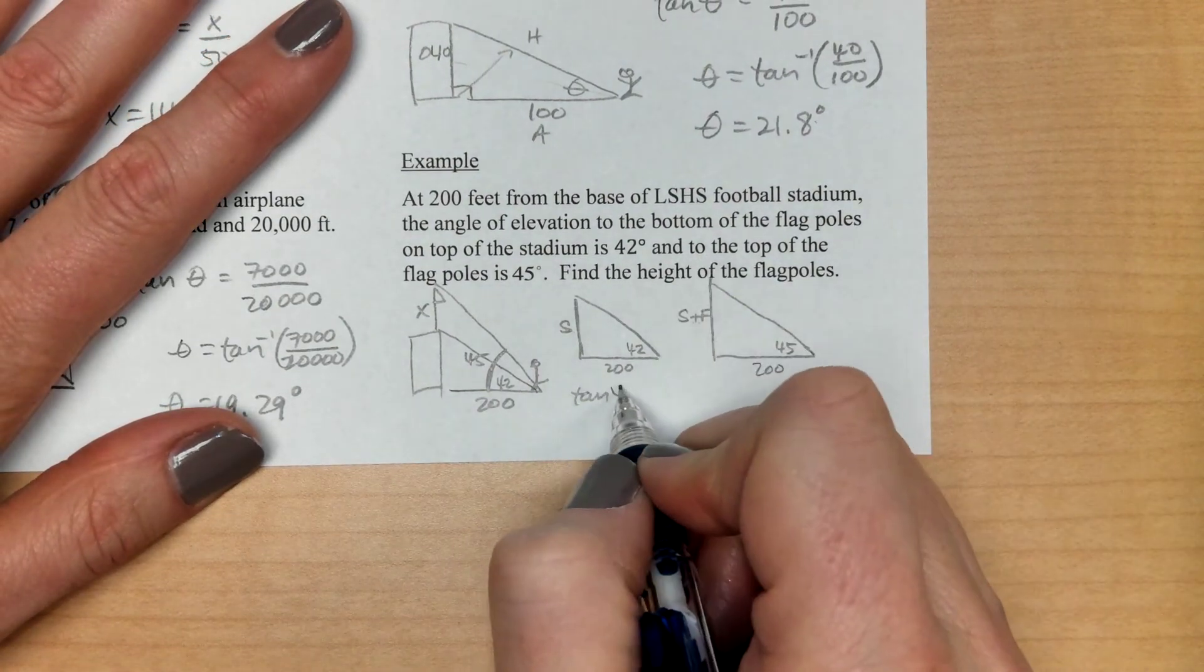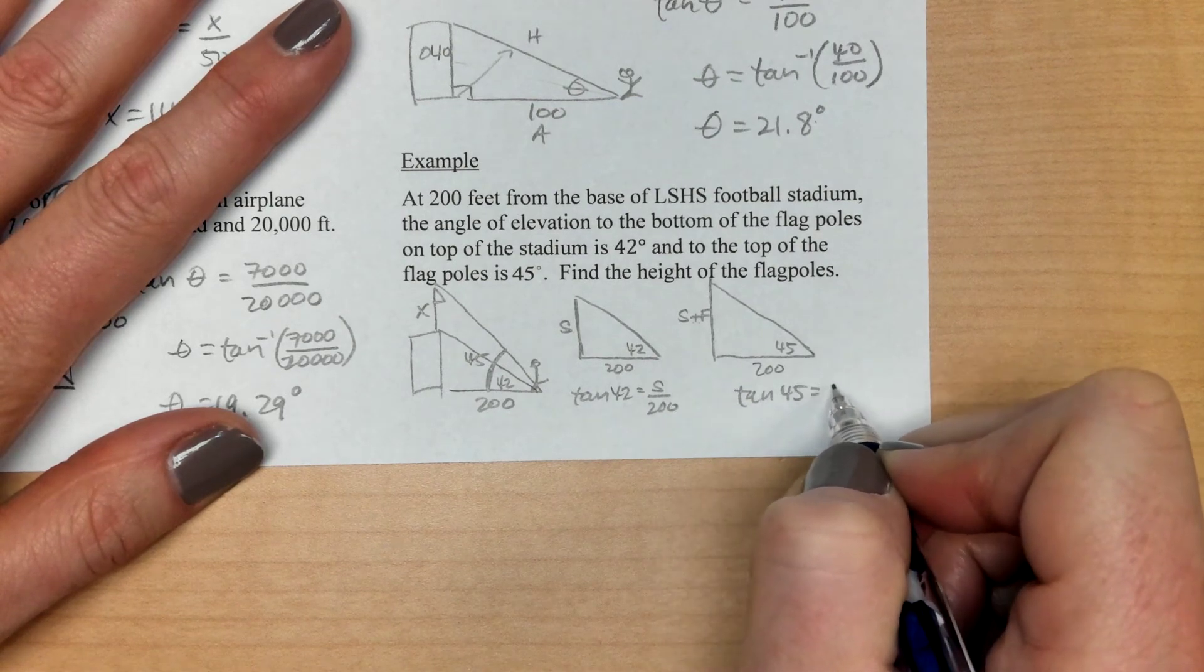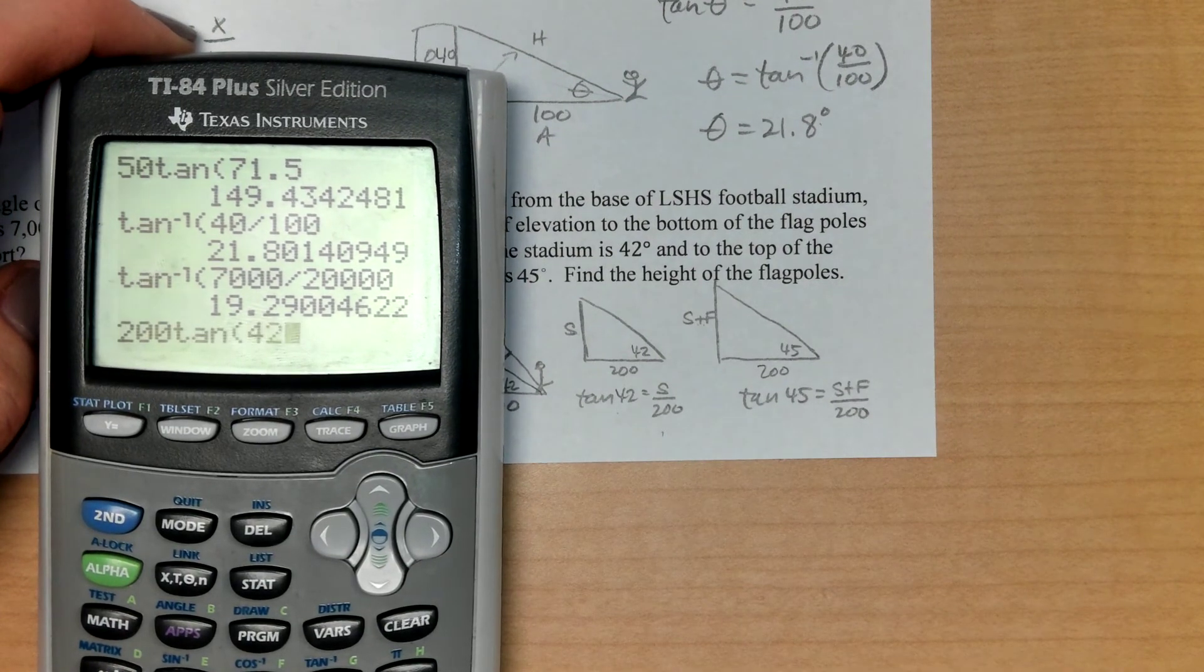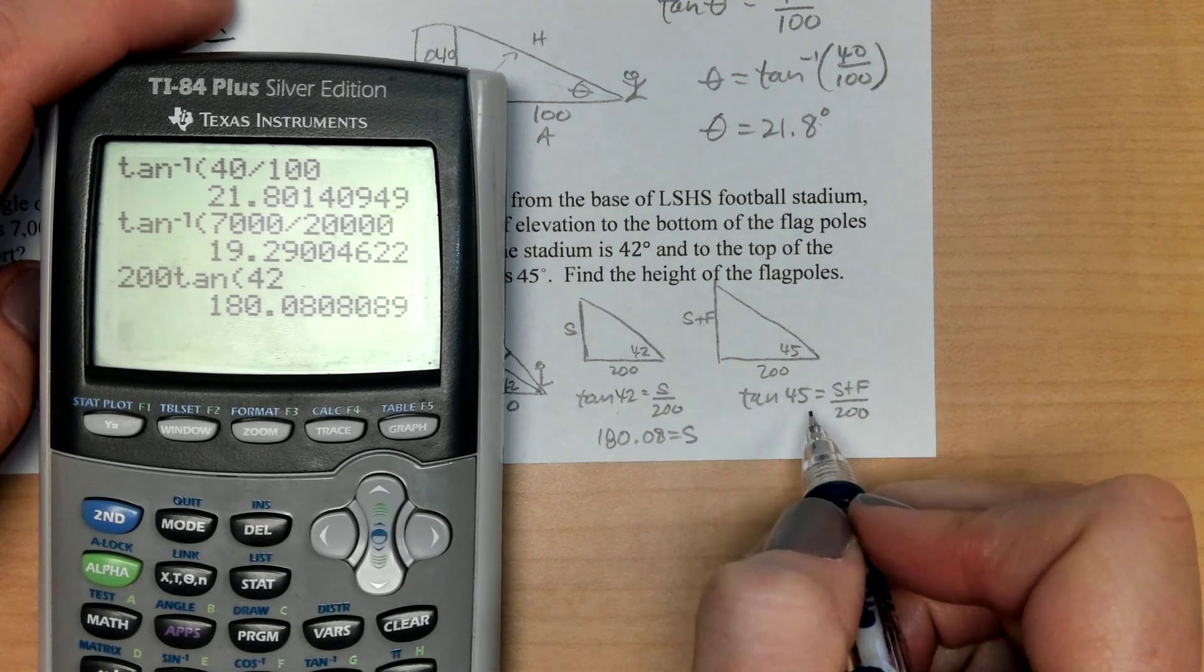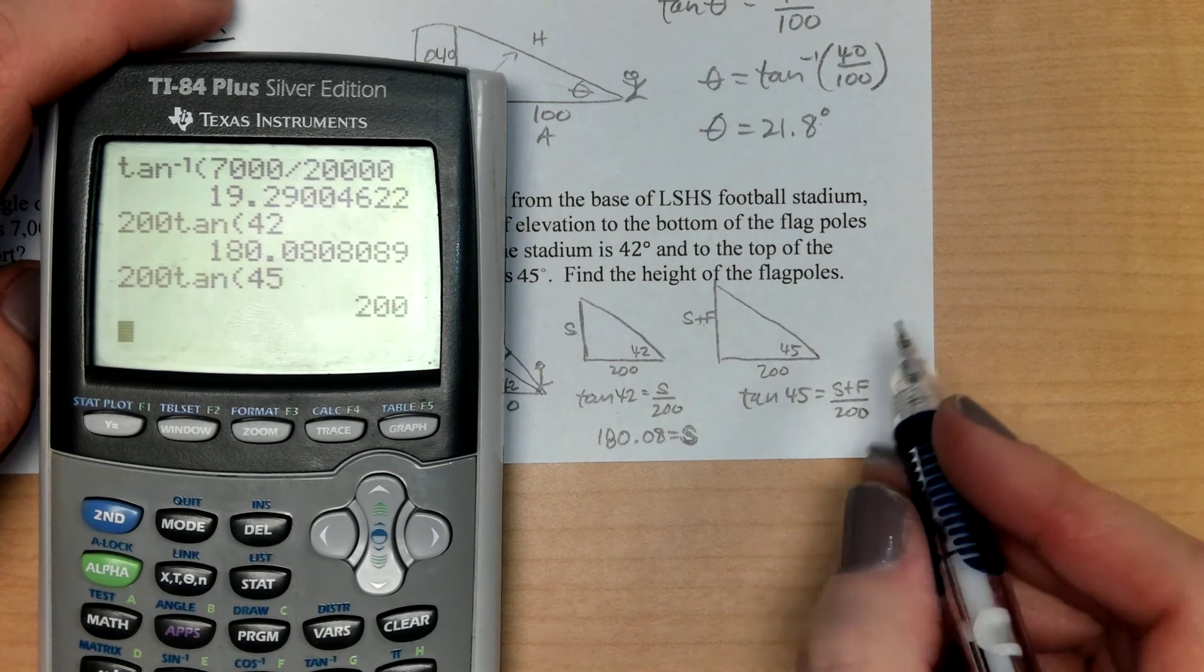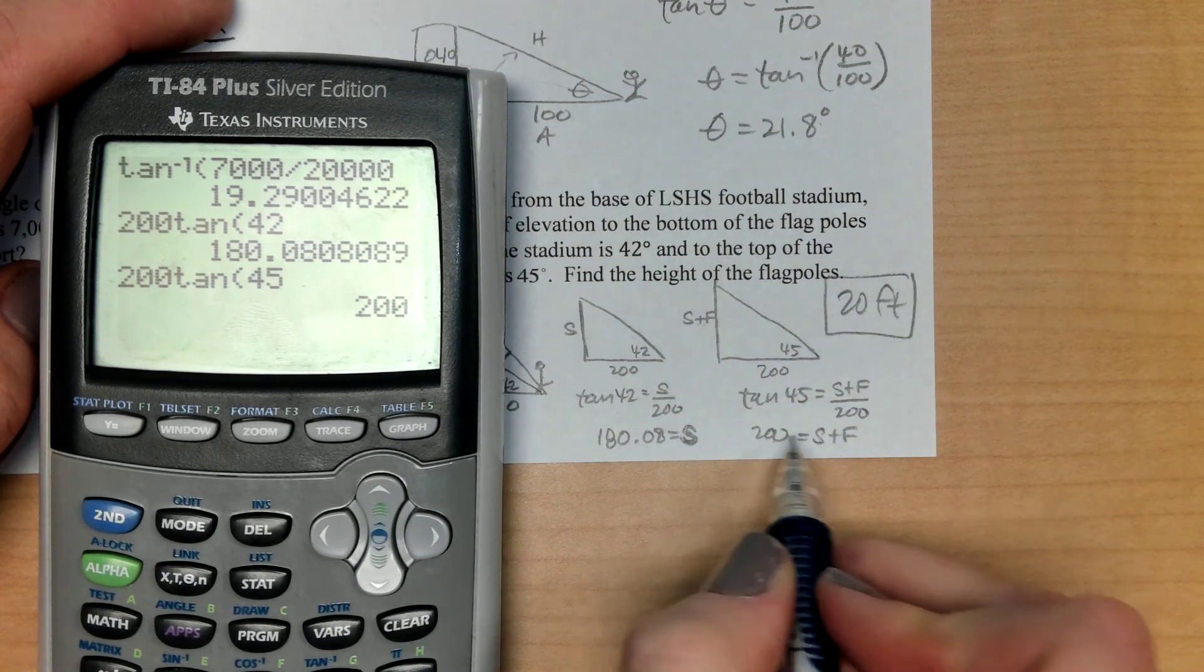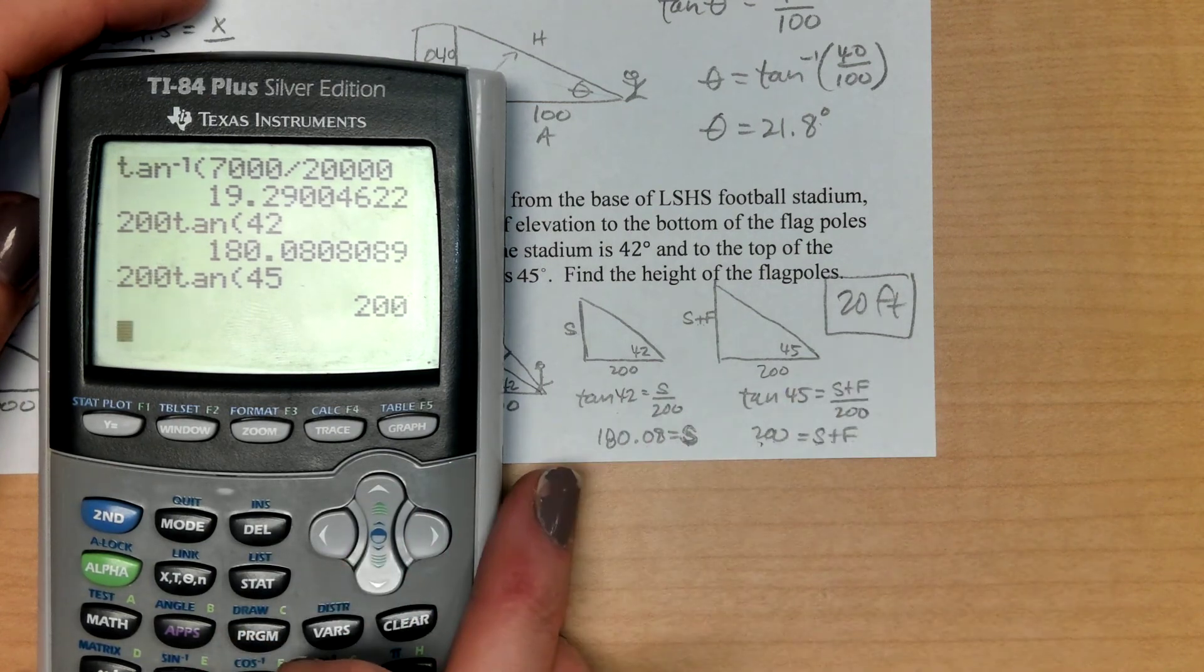Another tangent question, 42, and we've got S and 200. And this one's also a tangent. And we've got S plus F over 200. So in my multiplying, I've got 200 tan 42. So I've got about 180. And then over here, and that's an S because that's our stadium. Here I've got 200 tan 45, which is 200. And subtracting these two would give me about 20 foot tall flagpoles. So the stadium plus the flagpoles was 200 feet. Just the stadium alone was 180. So I just subtract the two and I get 20.